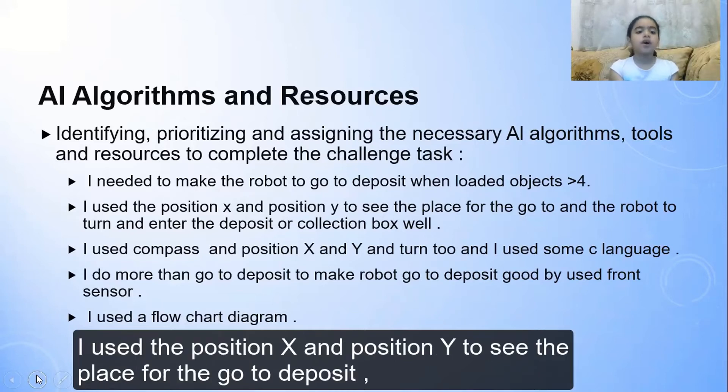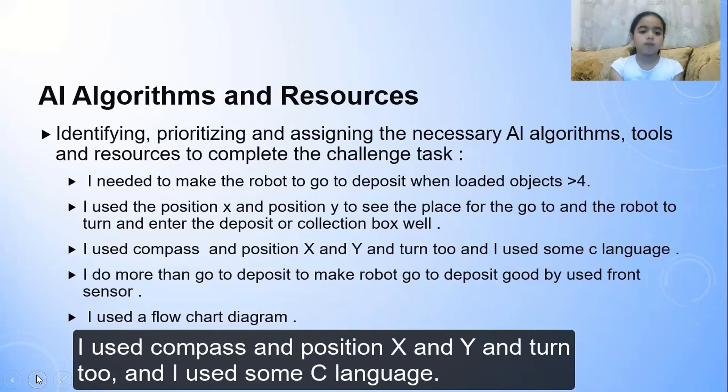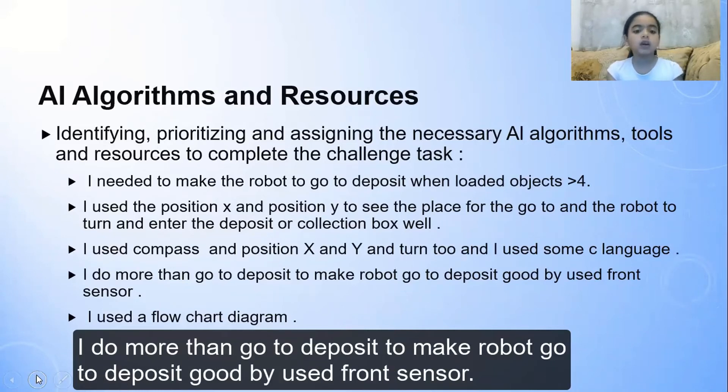I used the position X and Y to see the place for the go to deposit, the robot to turn and enter the deposit or collection box. I used compass and position X and Y and turn to 180, and I used some C language. I do more than go to deposit.